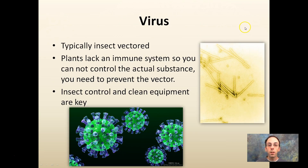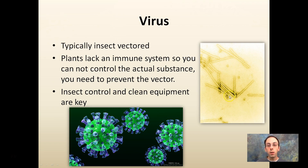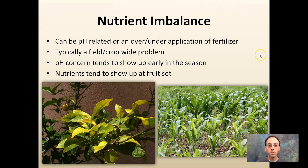Viruses are typically insect-vectored. Plants lack an immune system, so you cannot control the actual virus — you need to prevent the vector from bringing that virus in. Insect control and clean equipment are very important. This is tobacco mosaic virus, which has a very unique look to it. Viruses are very tough because plants lack an immune system, so we want to prevent the virus from even coming into our fields.